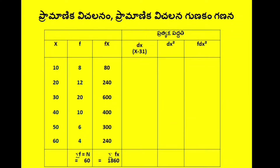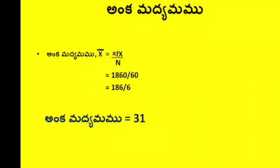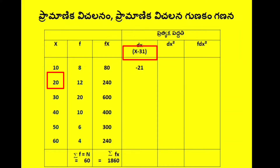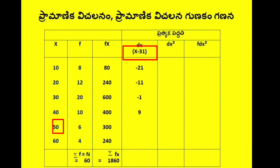dx is calculated as x minus the assumed mean. We added deviations to get values. Sigma dx is equal to 24. Next we calculate dx squared: 7 squared equals 49, and 12 squared equals 144.